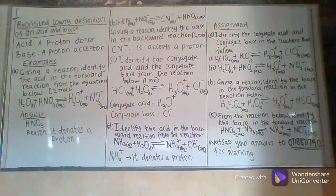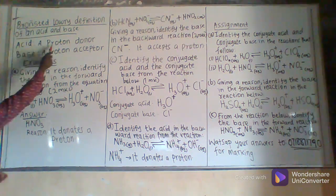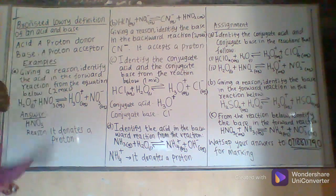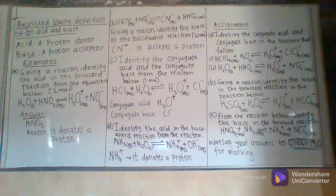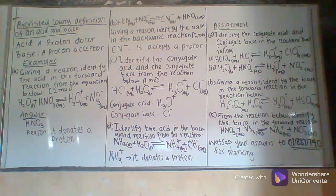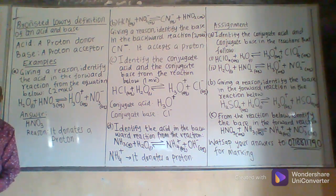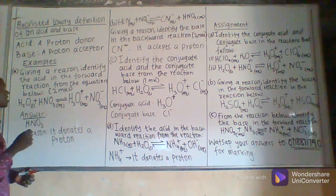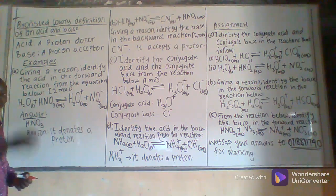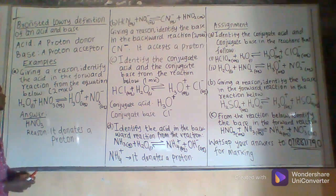According to Bronsted-Lowry, he postulated that an acid is a proton donor. When he said this, he refers to a proton — in this case, the particle being referred to as a proton is a hydrogen atom. So when you hear Bronsted-Lowry talking about a proton being donated, it is a hydrogen atom that is being donated.